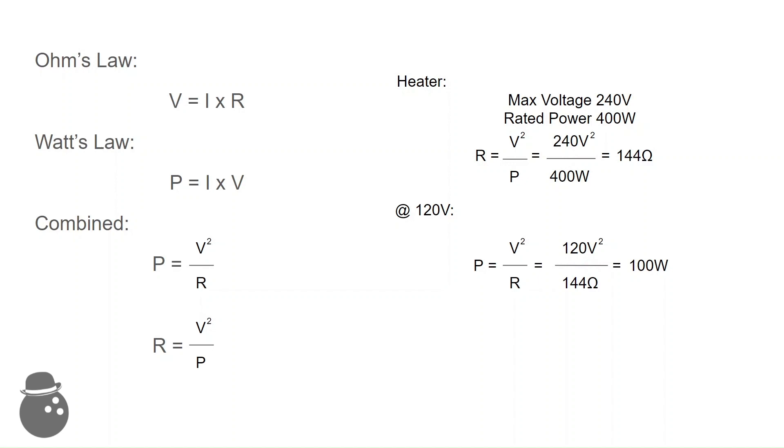Looking at theory, Ohm's law relates current and resistance to voltage and Watt's law, or the definition of a watt, relates the current and voltage to the power generated. Combining the two provides useful simplifications. Plugging in the rated values for the heater reveals that the band provides 144 ohms of resistance. That resistance is roughly constant, regardless of the voltage. Using that value, and the 120 volt input, reveals that the heater is only providing one-fourth of its possible power.